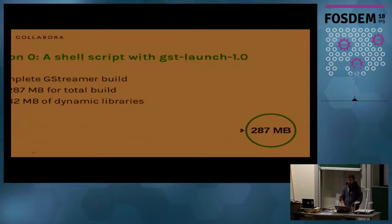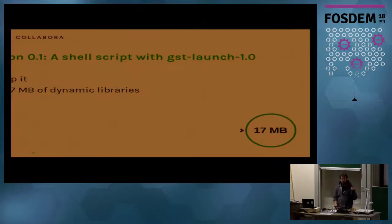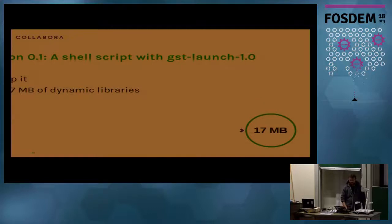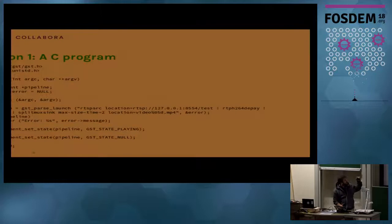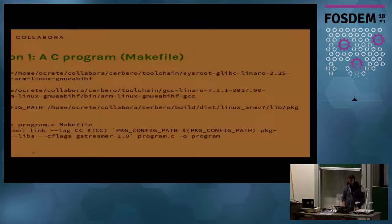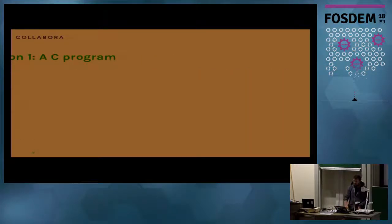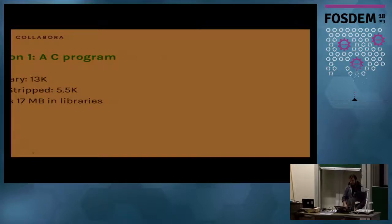82 megabytes of those are dynamic libraries, not plugins. The first version is just to strip the libraries, which brings it down to 17 megabytes — more acceptable, but still doesn't fit. The next version is to replace GST launch with a small C program, which is basically just GST launch in a little C file. The binary compiles to 13K, stripped to 5K — minuscule. But plus 17 megabytes in libraries, it still doesn't fit.